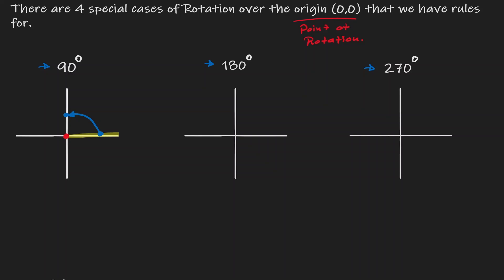Let's illustrate 180 degrees — we start on the positive x-axis, and 180 degrees is half a circle. And 270 degrees is three quarters of a circle. Now let's talk about the rules for each one. The notation for rotation is always a capital R. As a subscript, we indicate how many degrees we're rotating — in this case, 90 degrees. For 90 degrees, the rule is that given any coordinate point (x, y), the image is always defined as (-y, x).